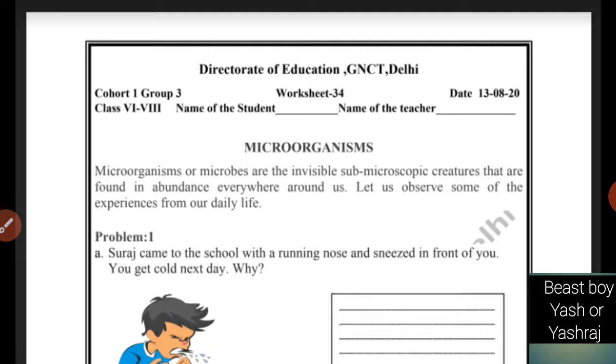In this worksheet topic is only microorganisms. Coronavirus is also microorganisms. Microorganisms means living. Micro means very small. Coronavirus is very small that we can't see them with our naked eyes. We need a microscope.